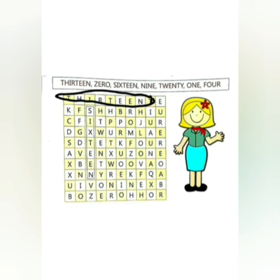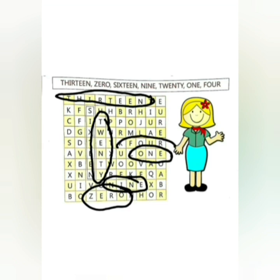Next is zero. Z-E-R-O-0. It is here. Now, nine. N-I-N-E-9. It is here. 20 T-W-E-N-T-Y-20. It is here. 1 O-N-E-1. It is here. And last is four. F-O-U-R-4. It is here in the fifth row. Let's circle it.